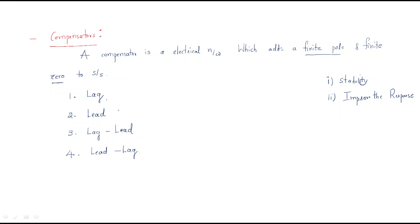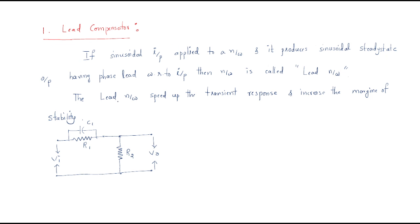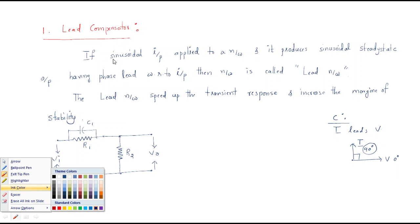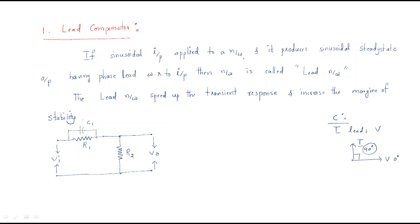We will discuss each compensator and its applications. The first compensator is the lead compensator. 'Lead' refers to phase lead — just as in a capacitor, current always leads voltage. If voltage is at zero degrees phase angle, current is at 90 degrees. Similarly, in a lead compensator, if a sinusoidal input is applied to a network and it produces a sinusoidal steady-state output having a phase lead with respect to the input, then the network is called the lead network.